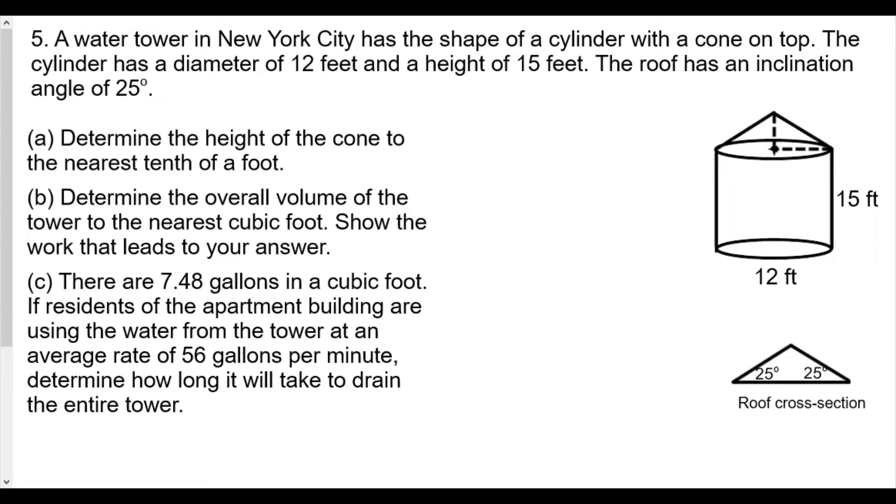Welcome back everybody, this is going to be our part two of our lesson 36 homework review: the volume of pyramids and cones. Here we have question number five. The water tower in New York City has the shape of a cylinder with a cone on top. The cylinder has a diameter of 12 feet and a height of 15 feet. The roof has an inclination angle of 25 degrees.